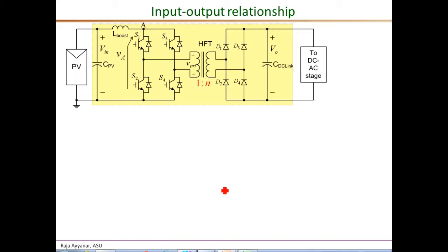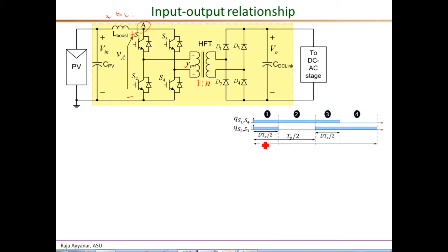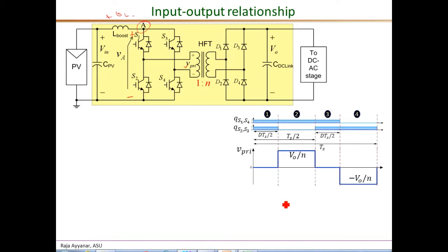The final step in this video is to derive the input-output relationship. To do that, we look at three voltage waveforms: V_primary, V_a (the voltage from point A to the DC ground), and V_L (the voltage across the inductor), and then apply volt-second balance to derive the input-output relationship. The gate waveforms for all switches are shown for reference. S1 and S4 share the same gate drive, and S2 and S3 share the same gate drive. Interval one has all four switches on; interval two has S1/S4 on; interval three has all four on again; and interval four has S3/S2 on.